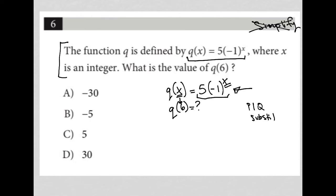All right, but we're very literally plugging in information provided by the question. So I still have five. So let's just go down here and make some more space. I have q(6) will equal 5. I still have negative one, but now instead of an x power, I'll have a six power, right? Because this x became a six.